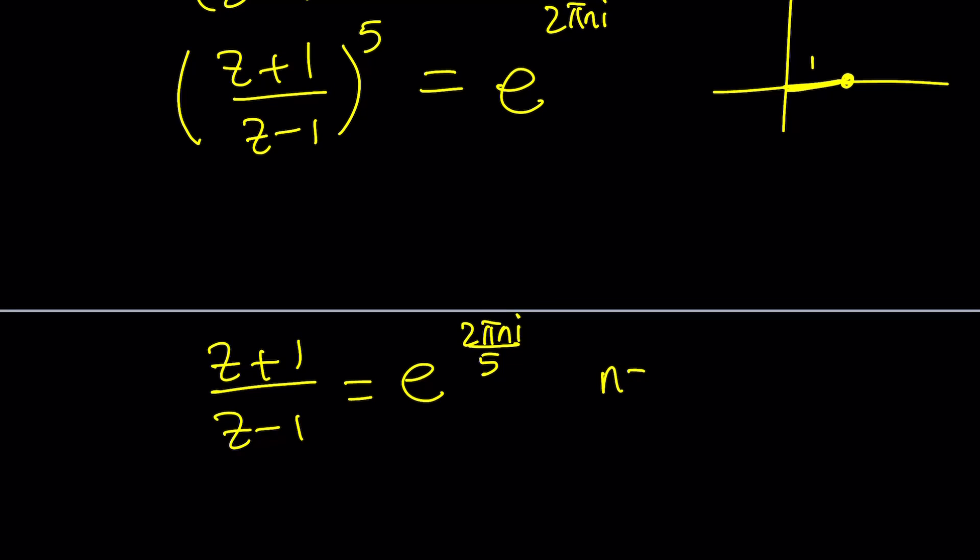Now, n is supposed to be 0, 1, 2, 3, and 4, right? Wrong. Let's go ahead and find out.